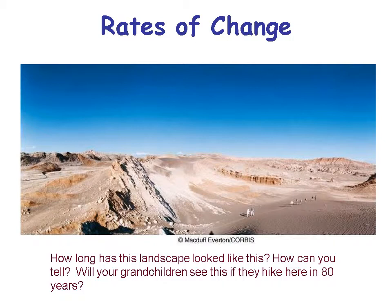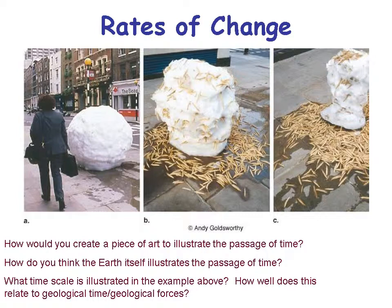Take a look at this landscape and ask yourself: how long does this landscape look like this? How can you tell? Will your grandchildren see this if they hike here in 80 years? What we're talking about is how fast is the rate of change in various things. There's also a piece of art meant to illustrate the passage of time: a snowball on the street melts over time, and grain heads fall out. How long did it take that snowball to melt? It probably depends on the temperature — more than one day, but probably less than two weeks.